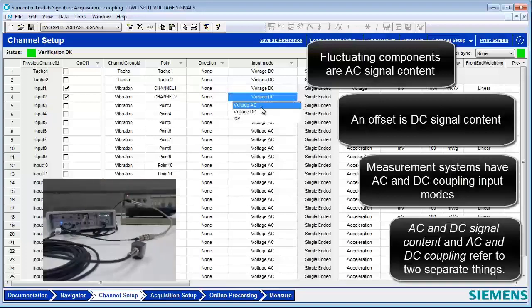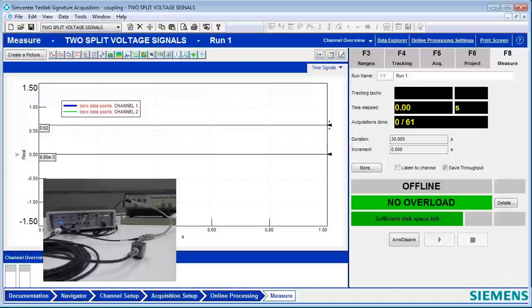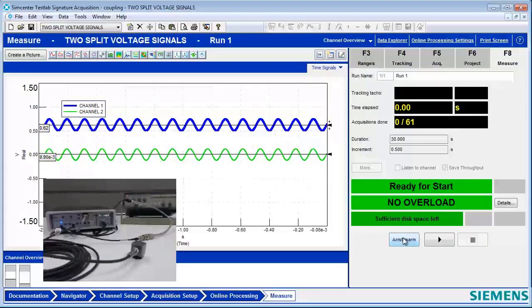But I'm going to switch one of these to AC coupling. So we've got the same signal coming in with both an AC and a DC portion. One is going to be AC coupled, and one is going to be DC coupled. Let's see what happens.